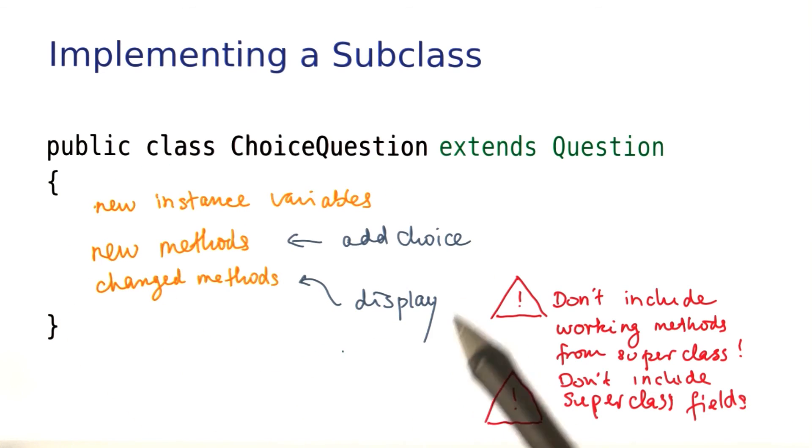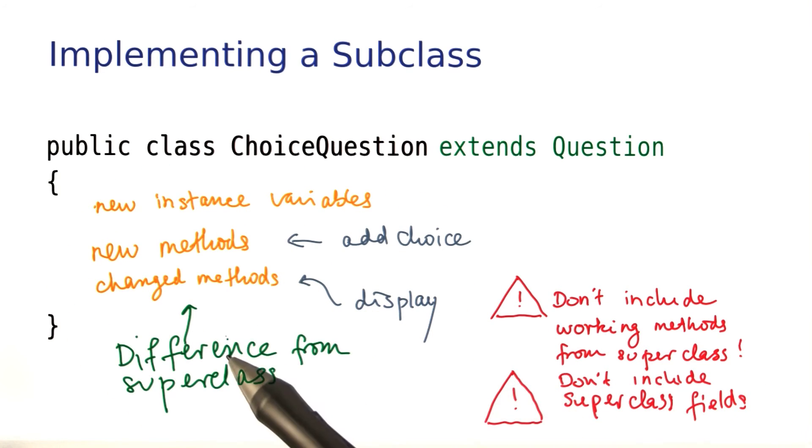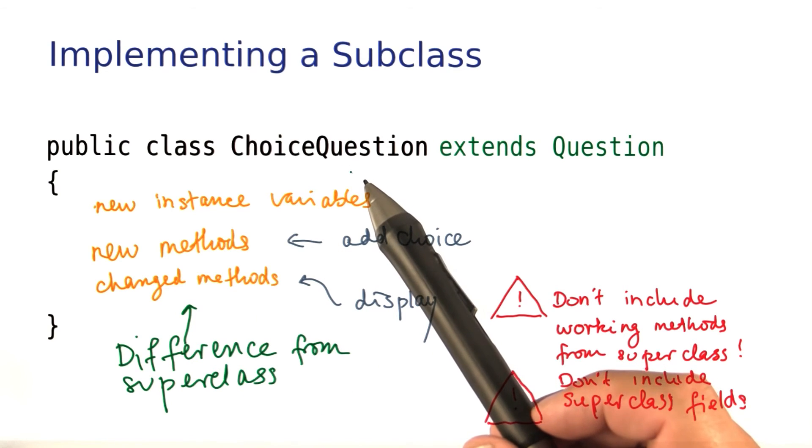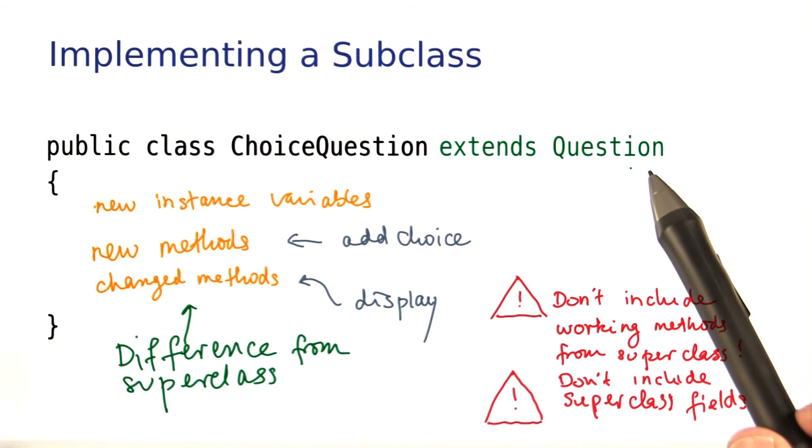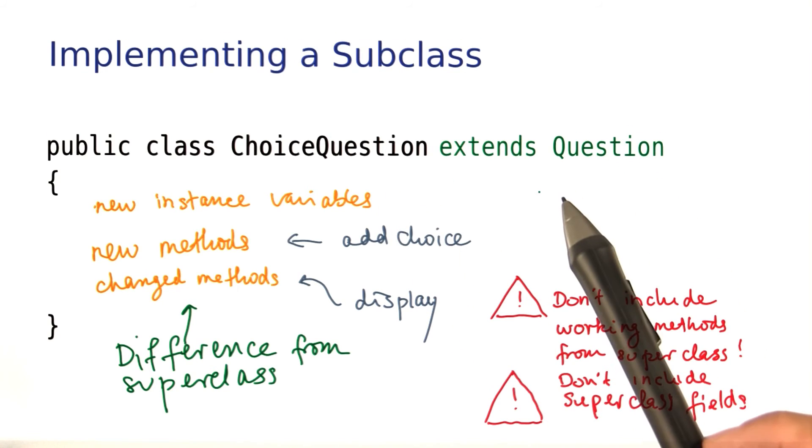The point is that what you put inside here is the difference from the superclass. Everything that the subclass has that the superclass doesn't have at all, or that it doesn't have in the same way. Let's have a closer look at exactly how that works for question and choice question.